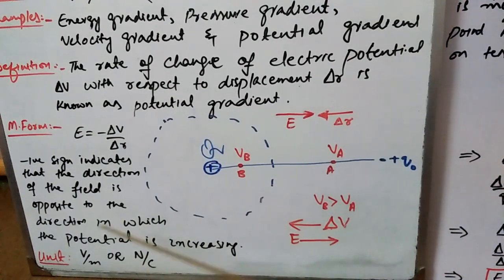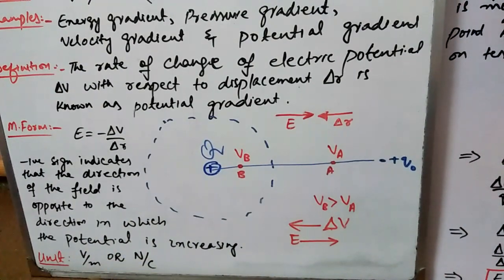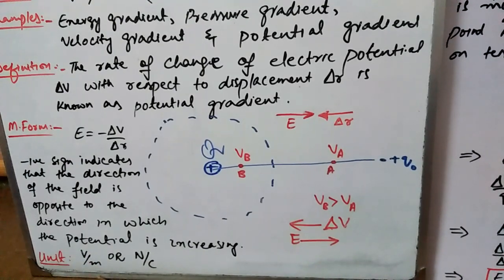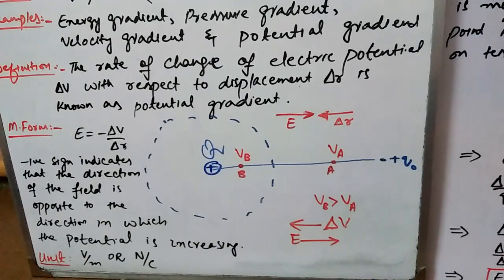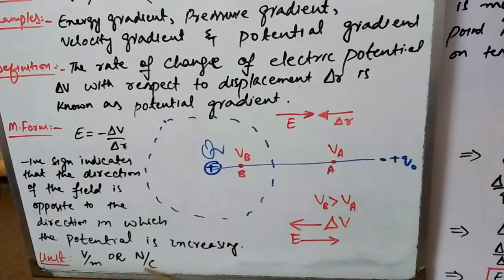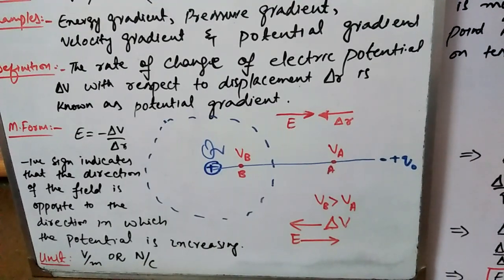The unit of potential gradient is volt per meter. Using volt per meter, another unit can be derived for potential gradient, which is Newton per Coulomb. This derivation was already covered in the topic of electric field intensity.